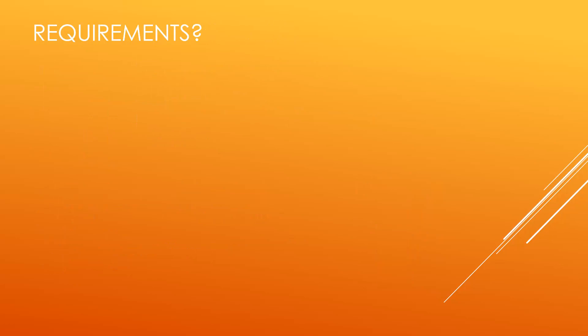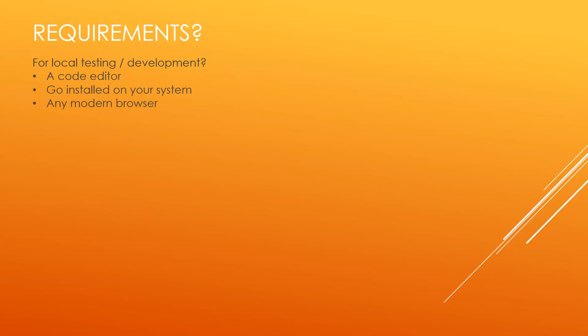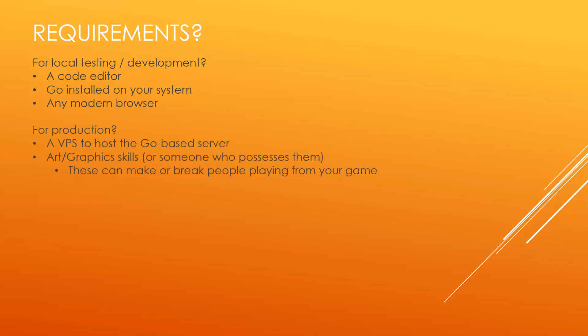For local testing and development, we're going to want a code editor, Go installed on the system, and any modern browser. Two of those you likely already have — a code editor and a browser — and I'll have a link in the description to install Go for Windows. For production, we're going to want a virtual private server to host our Go-based server, and you're likely going to need someone with graphics skills, because graphics are very important for these types of games and can really make or break whether people play your game.